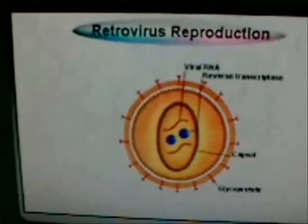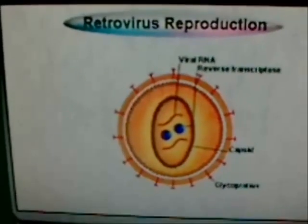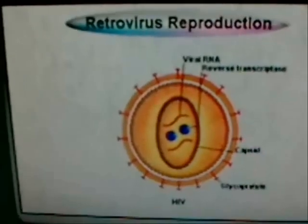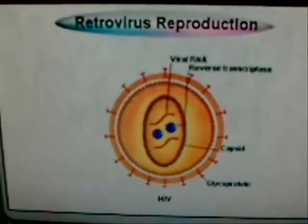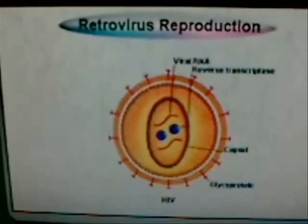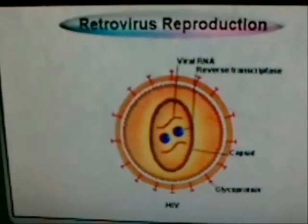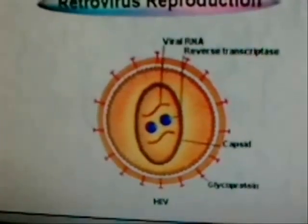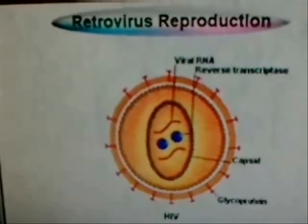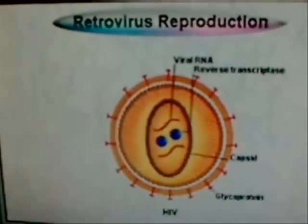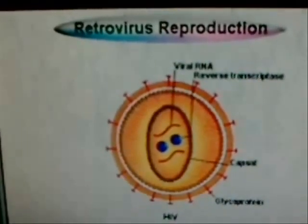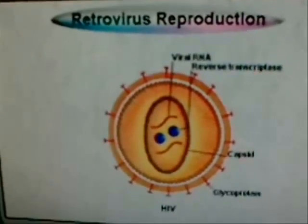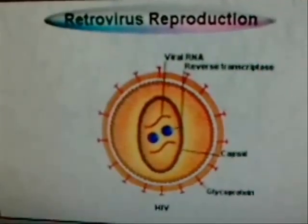The retroviruses, which include HIV, the virus that causes AIDS, are known for having the most complex reproductive cycles. This refers to the way in which retroviruses use an enzyme called reverse transcriptase to make DNA from RNA — the reverse of the usual cellular process of making RNA from DNA. To understand this, let's look at the way in which HIV reproduces within a human helper T cell.